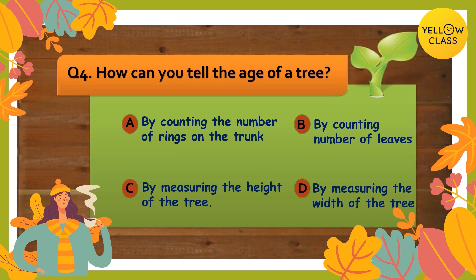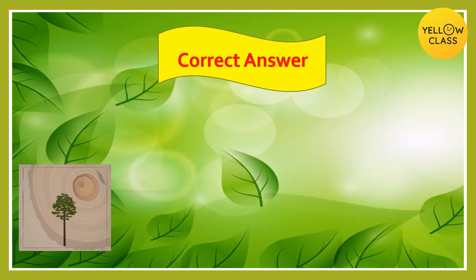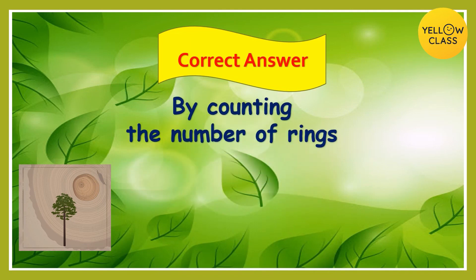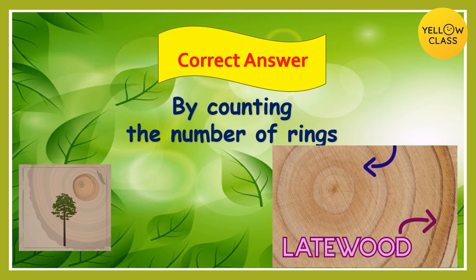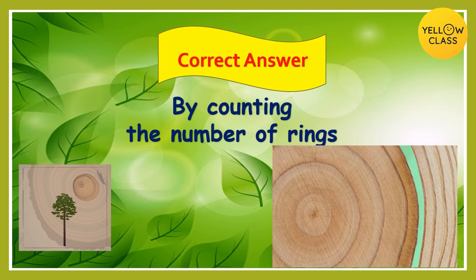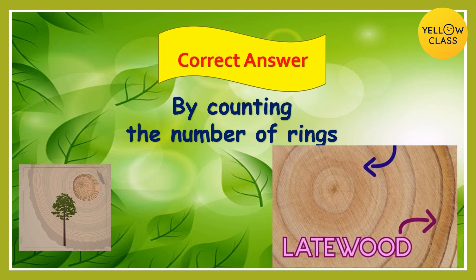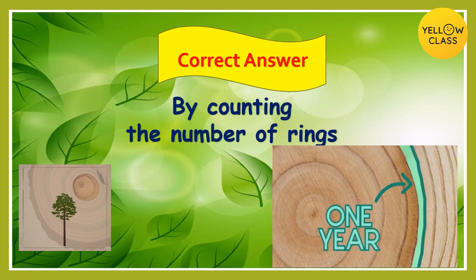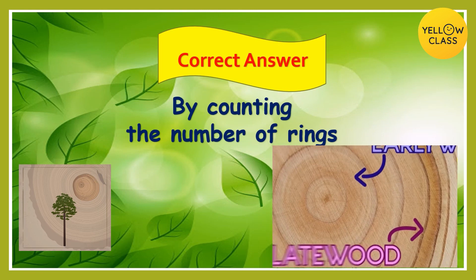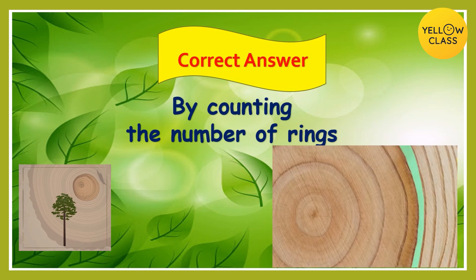You have 15 seconds — tickle your brain, get your thinking hat going! And your time is up. The correct answer is: you can tell the age of a tree by counting the number of rings on its trunk. These rings are called growth rings. The light-colored ring represents wood that grew in spring or early summer, and the dark ring represents wood that grew in late summer and fall. One light ring plus one dark ring equals one year of the tree's life!